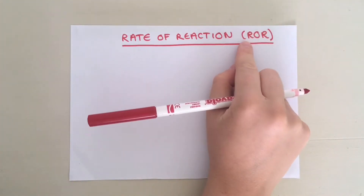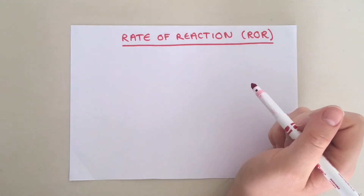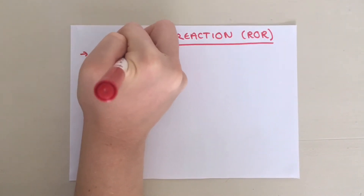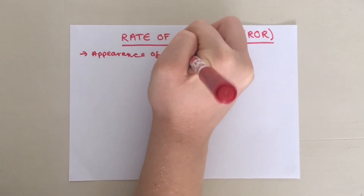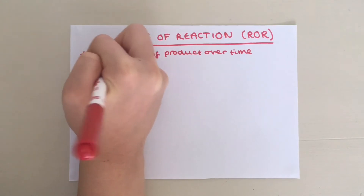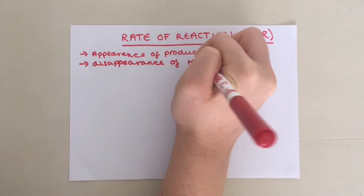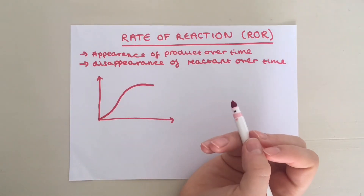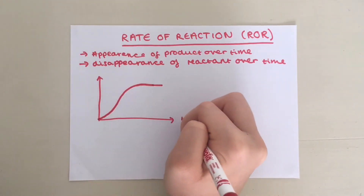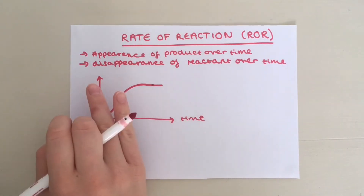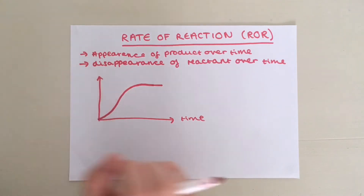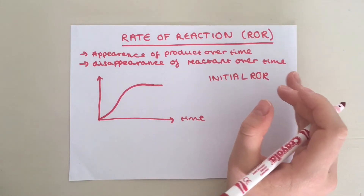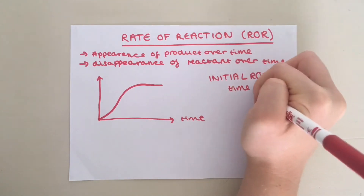The rate of reaction, otherwise known as ROR, is really important when discussing enzymes. You can measure rate of reaction by either looking at the appearance of a product over time, or the disappearance of a reactant over time. Rate of reaction graphs usually look like this, with time on the x-axis and the appearance of product or the disappearance of reactant on the y-axis. The initial ROR is the rate of reaction at the start of the reaction when time equals zero. To work out the initial rate of reaction, you need to draw a tangent to the curve at time equals zero.